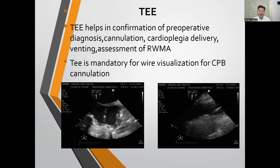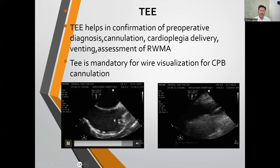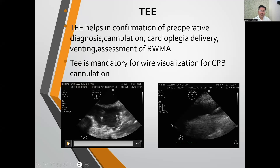TEE is mandatory for visualization of cardiopulmonary bypass cannulation. Surgeons put a guide wire through the femoral vein for IVC cannulation, and we must visualize that guide wire as it enters the RA through the IVC — it can deviate into the hepatic system, causing devastating complications. The first video shows a mid-esophageal bicaval view with the wire visible coming from the IVC into the RA. Only after visualization of the wire should we allow the surgeon to place the IVC cannula.